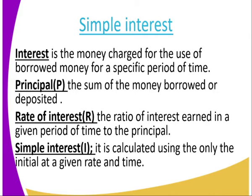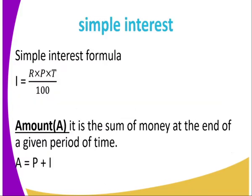Then we have the principal — it is the sum of money that you borrowed or deposited in order for you to get the interest. Then we have the rate of interest — this is the ratio of interest earned in a given period of time to the principal. Then we have simple interest — it is calculated using only the initial, that is the principal, at a given rate and time.